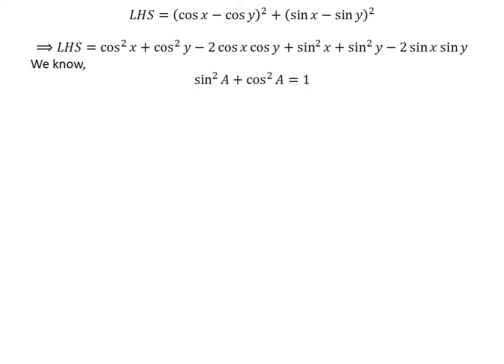We know the famous trigonometric identity: square of sine of a plus square of cosine of a is equal to 1.